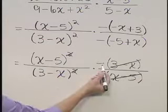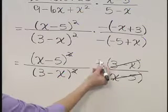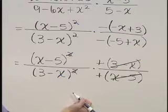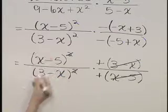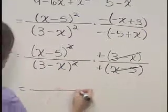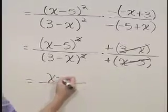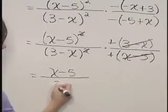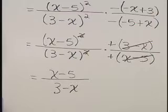Note as well that a negative divided by a negative, negative, that's going to become a positive. That's going to leave our product here as x minus 5 over 3 minus x in simplest form.